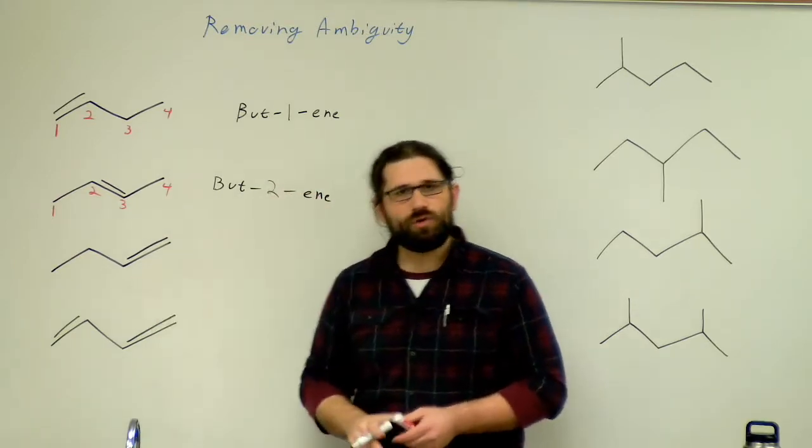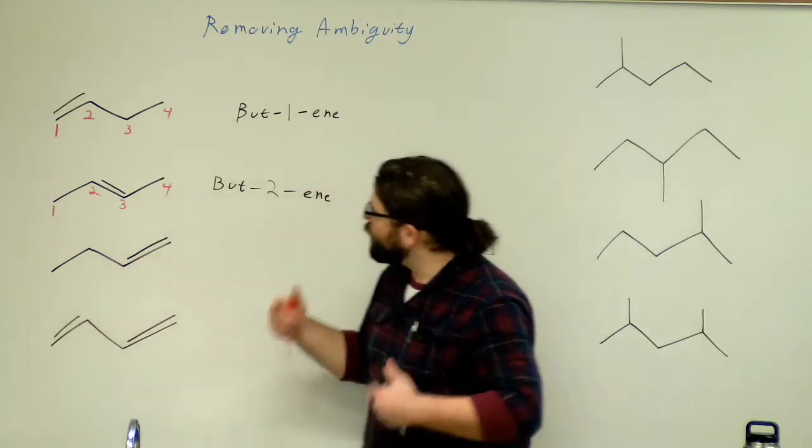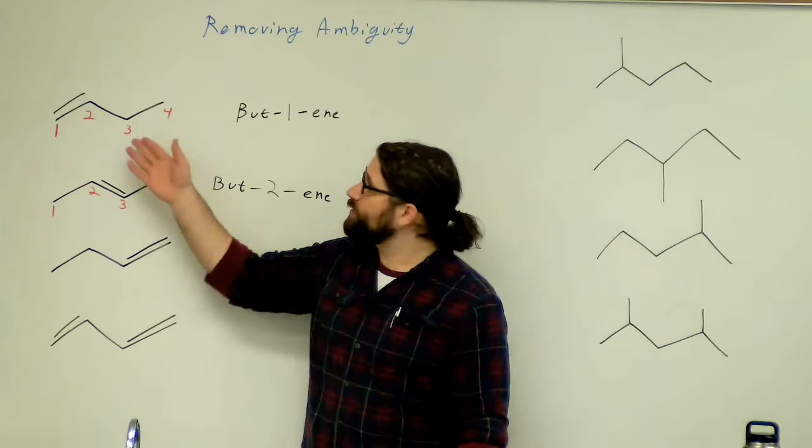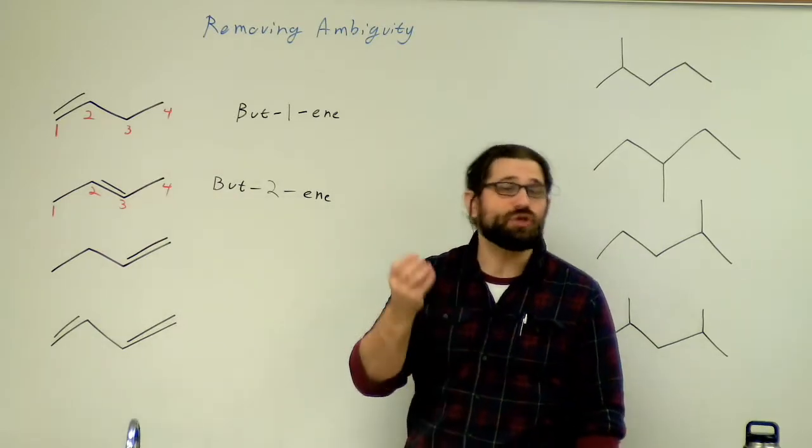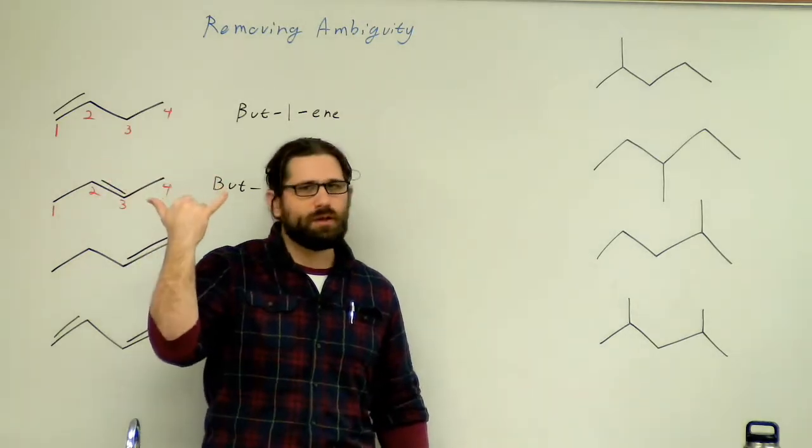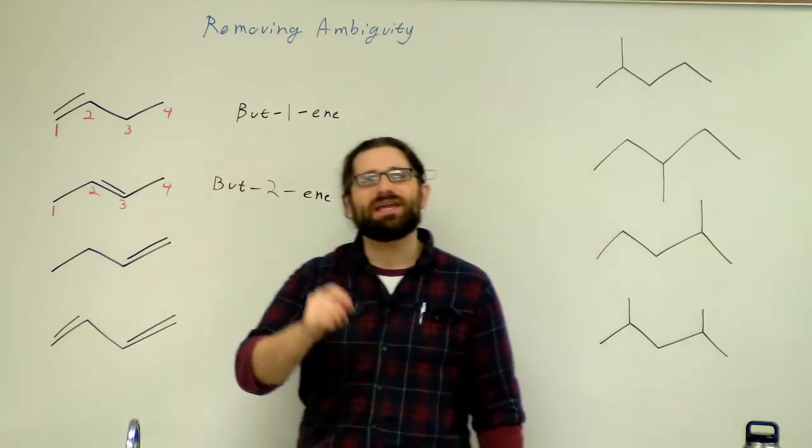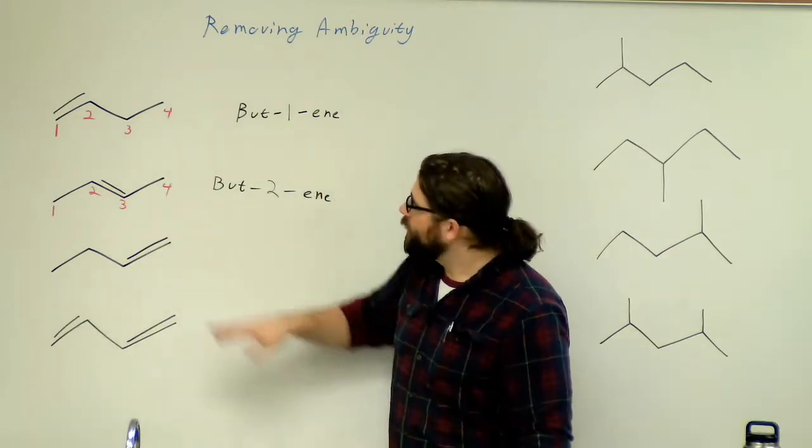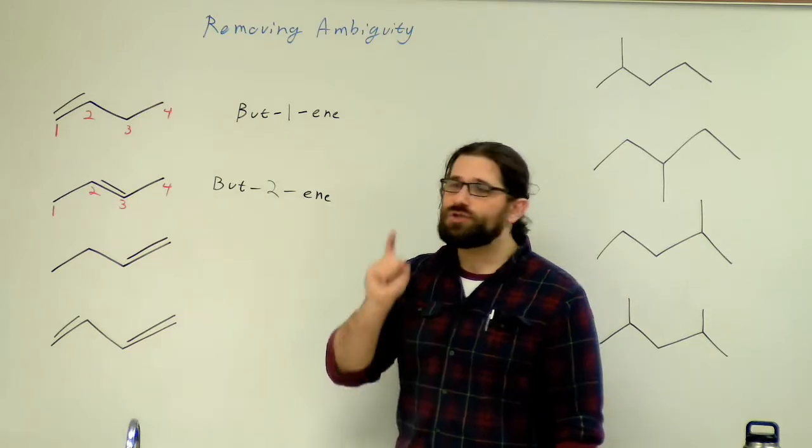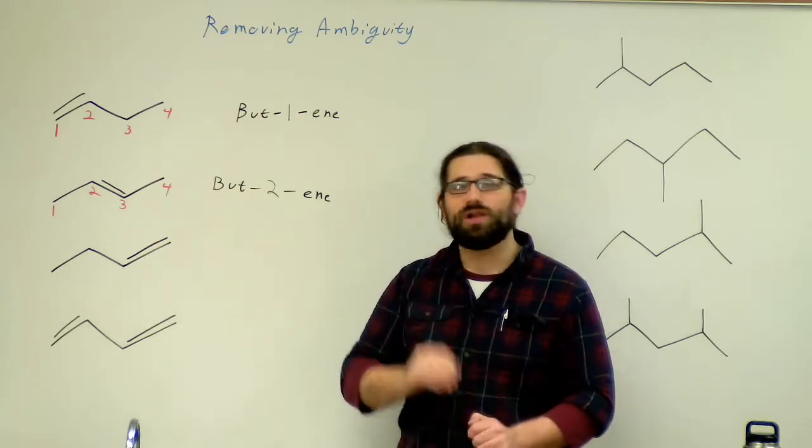How about this one? Well, if we continued numbering from left to right, I would say one, two, three, four, but-3-ene. But this is going to be a little bit different. The reason is that these are models of an actual three-dimensional molecule. If I took this molecule out of the board and flipped it around, what would it look like? It would actually look like this. So this molecule and this molecule are actually the exact same thing.